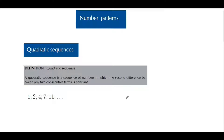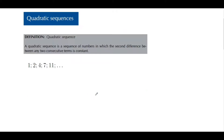Hey everyone, welcome to the show. Today we're going to be doing some number patterns — more specifically quadratic sequences. By definition, quadratic sequences are sequences that have a second difference that is common. That's probably the best way to explain it, but what does it actually mean? I have this quadratic sequence already set up: 1, 2, 4, 7, 11, and so on.